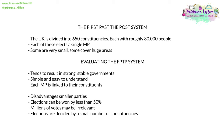In Britain, we use the first-past-the-post electoral system, where the United Kingdom is divided into 650 constituencies. Each of these has roughly 80,000 people and elects a single MP. Some of these are very small, such as inner-city constituencies, but some cover huge areas where population density is low, such as the Highlands of Scotland. There are things to consider when evaluating this system. It does tend to result in strong and stable governments. It's simple and relatively easy to understand, and each member of parliament is linked to their constituents. But there are disadvantages: smaller parties are greatly disadvantaged; elections can be won by way less than 50% of the vote; millions of votes may be irrelevant (if you are a Labour voter in a safe Conservative constituency, your vote counts for little); and elections are decided by a small number of swing constituencies, known as marginals.